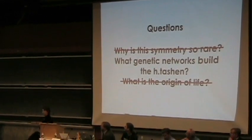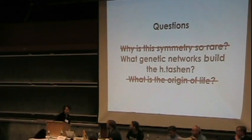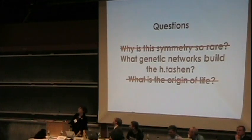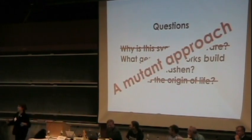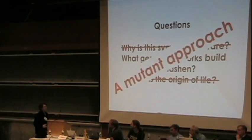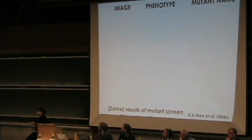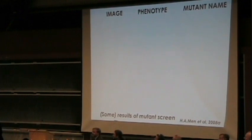Let's go back to our seminal question: what genetic networks make this unique lifeform? The answer lies in a series of experiments done by Professor Mann and associates in his laboratory, taking an approach you're all familiar with — find the genes by finding the mutants. In an enormous mutant screen, a series of mutants was isolated.